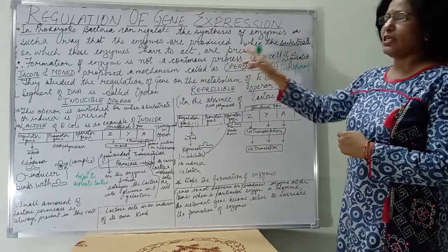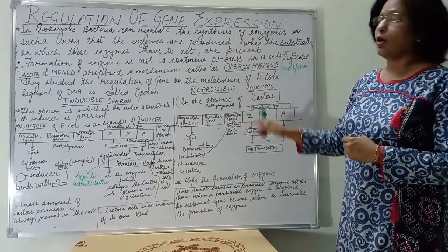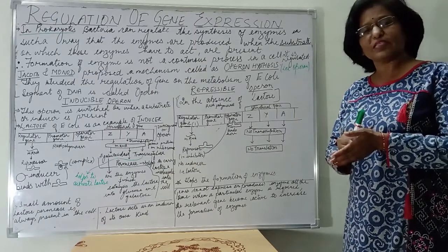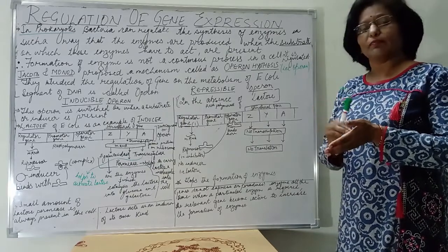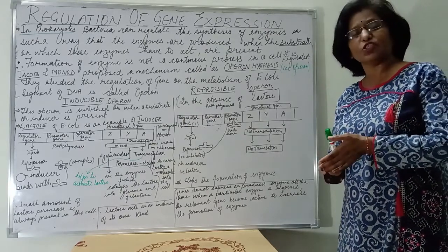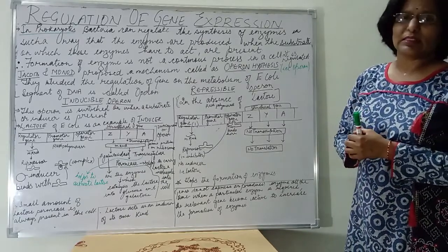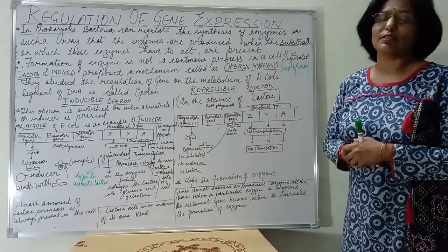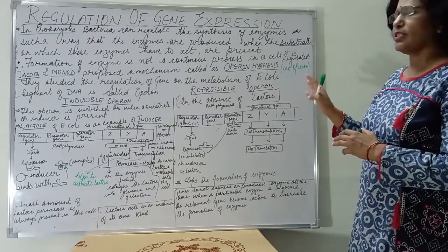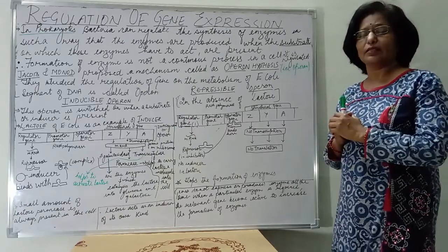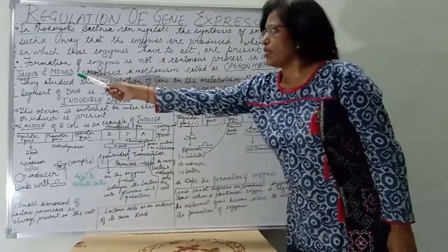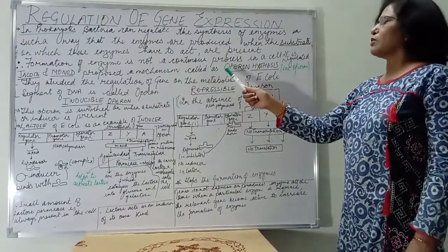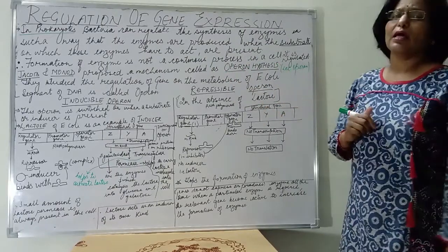If the substrate is present, then the enzymes are formed — the gene expresses itself and gives the message to the messenger RNA. This transcription process occurs and the messenger RNA, which has taken the coded message, translates it into a particular enzyme. That enzyme then acts on the substrate and forms the simplest product. To explain this, Jacob and Monod produced a mechanism called the operon hypothesis, also known as the lac operon.